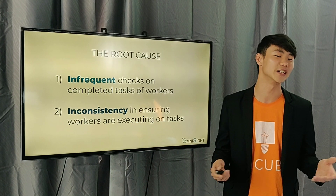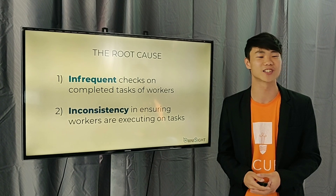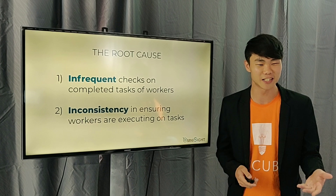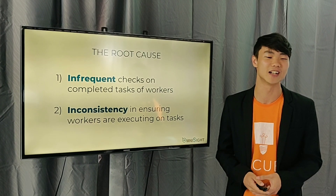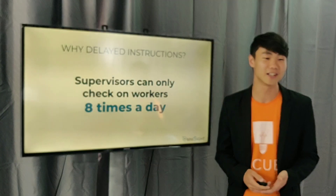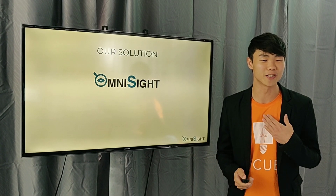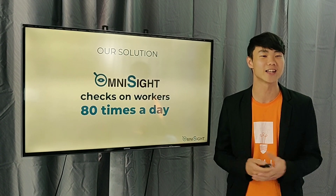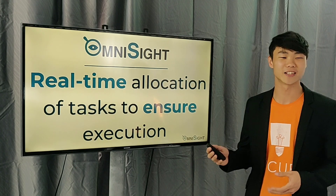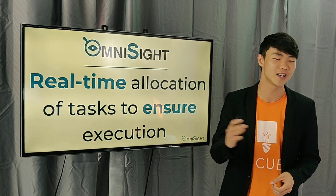The root cause, at the end of the day, is infrequent checks on completed tasks by supervisors, and inconsistency in ensuring workers are executing on tasks. In reality, supervisors only check eight times a day. What we do on-site is check 80 times a day, enabling real-time allocation of tasks to ensure execution.